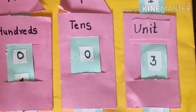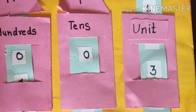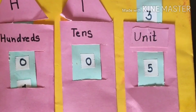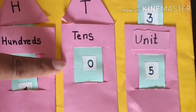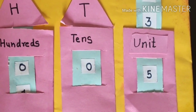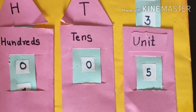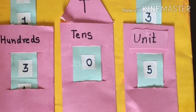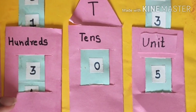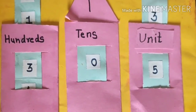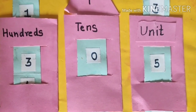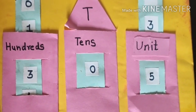Now look at another example. There is a number at units place — it's 5. And there is 0 at the 10th place, which means this is not a 2-digit number; it is only 5. And here, 3 is at the 100th place. This is a 3-digit number: 3 at 100th place, 0 at 10th place, and 5 at units place. We read this number as 305, because there is no 10th.